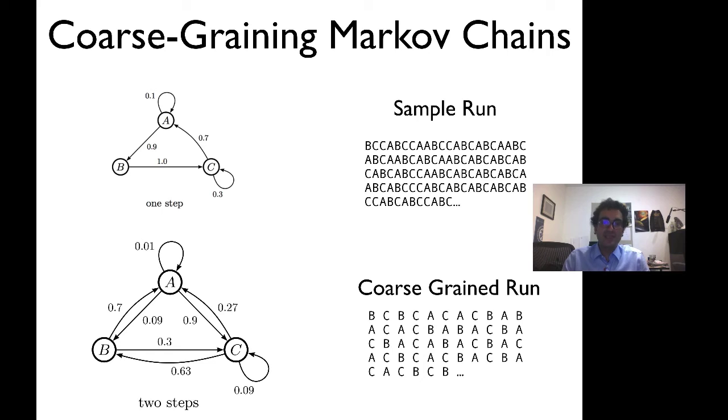Notice that in the one-step model, it's impossible for the system to jump from B to A. But, in fact, in the coarse-grain system, it's very likely that if you see a B, the next symbol you'll see will be an A. It happens 70% of the time. And you can see if you look at the coarse-grain run, it's pretty easy to find cases where you have B and then A.